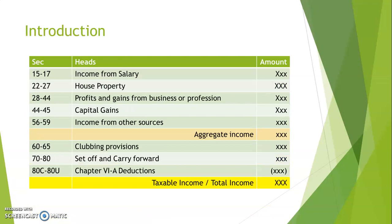Till now, we studied income from salary — that is sections 15 to 17 — house property sections 22 to 27, PGBP sections 28 to 44, capital gains sections 44 to 45, and income from other sources sections 56 to 59. These are the five heads of income, and the total of these five heads is called the aggregate income.